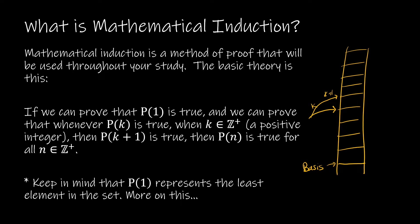So if K happens to be the first step, I can get to the second step. If K happens to be the second step, I can get to the third step. From the third I can get to the fourth, and so on. Mathematical induction says as long as we can get to the first step, and we can prove that from some arbitrary K step we can get to the next step, then we know we can get to all of the steps.